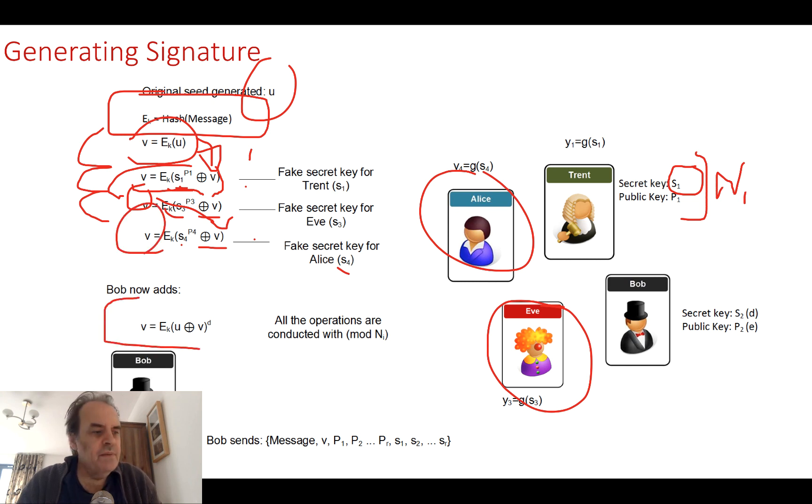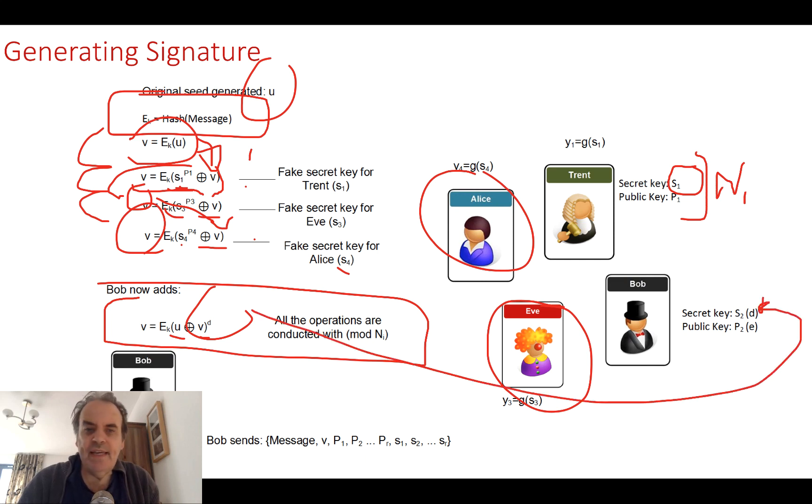Now at the end of it, Bob takes the resultant v value and XORs it with u, our original value, and then raises it to the power of his secret key. This is the trapdoor. So Bob takes his real secret key and uses it to raise it to the power of d.